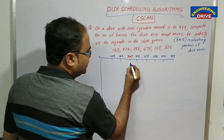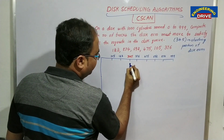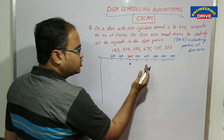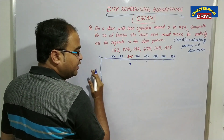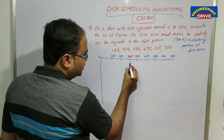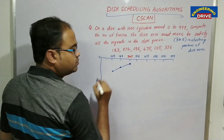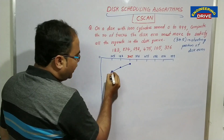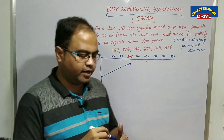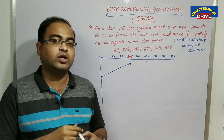As usual, take the disk arm starting position as 345. We know that scan will work from the starting position, scanning the left side numbers first — here 123, then 105, going to 0. Now you might ask: this seems the same as scan, so what is the difference in circular scan?